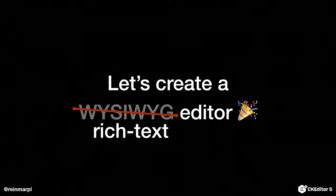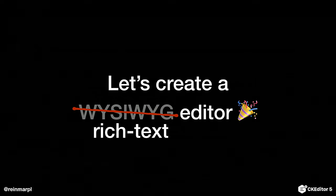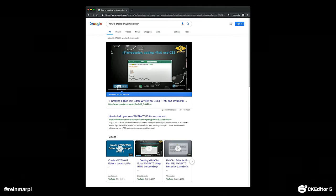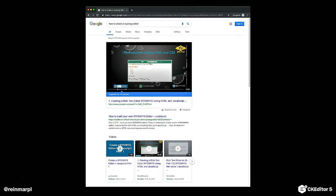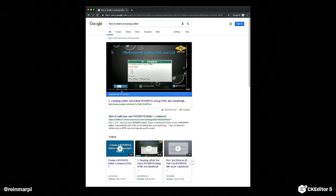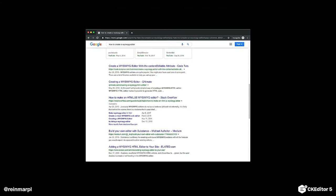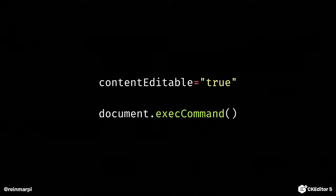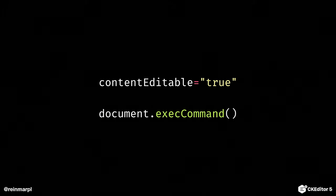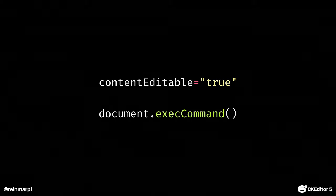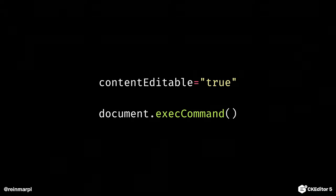Let's create a rich text editor. You might be thinking this is a pretty complicated task — I have no idea how to start. But we are developers, so let's Google it. This is 'how to create a WYSIWYG editor.' There is a tutorial, 13 minutes long, and at the end you have a working WYSIWYG editor. Another result, another tutorial, 5 to 10 minutes read and you have a working editor. You will learn from those articles that you need two things: the attribute contenteditable true, which makes an element editable, and then document.execCommand to apply bold to the selection or change a paragraph into a heading.